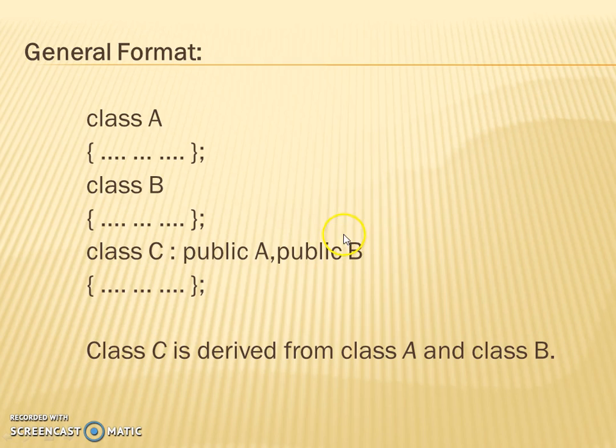Class C includes or is considered to have base class A and base class B with visibility public. So class C is derived from class A and class B, which are two base classes for class C.